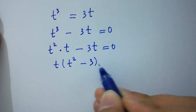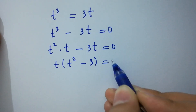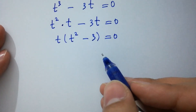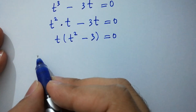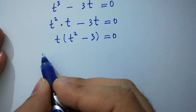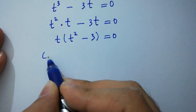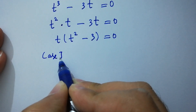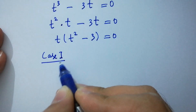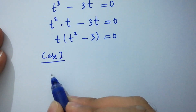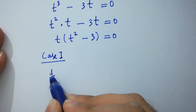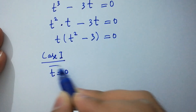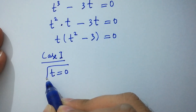So we have t cubed minus 3t equals 0. We have two cases here: case 1, t equals 0, which is one value of t.